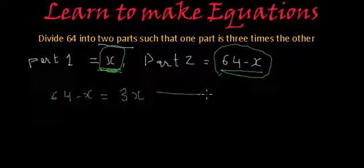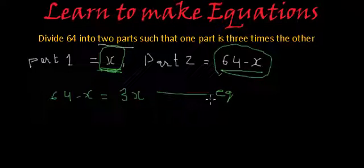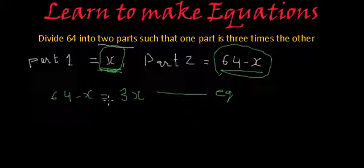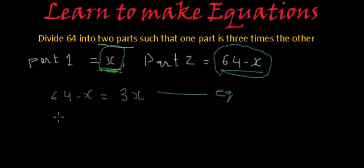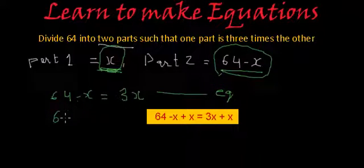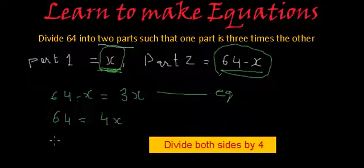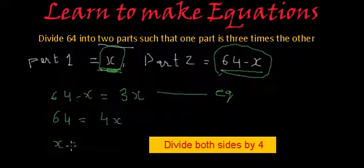So this will be the equation, and if we rearrange it, what will we get? If we add x to both sides, we will get 64 is equal to 4x.